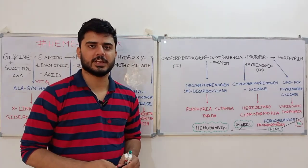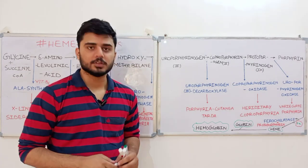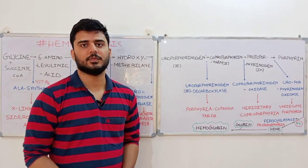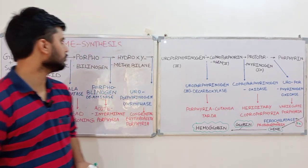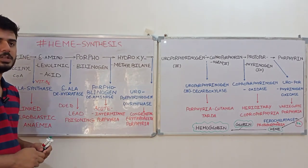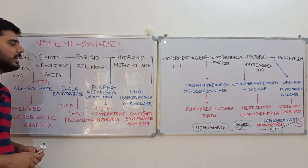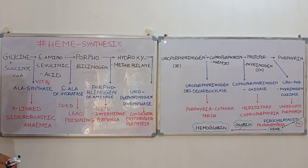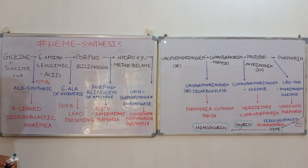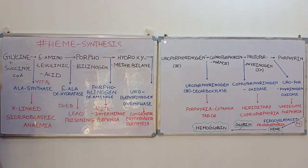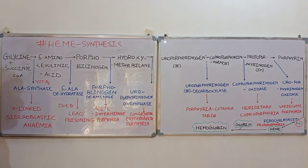Hello and welcome everyone to Synapse. So far in our hematology portion we have completed our discussion on the formation of blood components. Now in today's lecture we'll discuss an important topic: heme synthesis. This is very important because with each step of its formation we'll have a disease linked to it. We'll first discuss the steps, then the disease linked to each step.